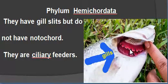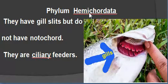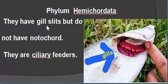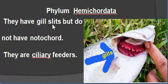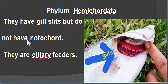Fish is a chordate animal — it has gills. The hemichordate animals also have gill slits, which are openings that lead to gills inside. This is the chordate character. Hemichordate animals do not have a notochord, and the absence of a notochord is the invertebrate character.